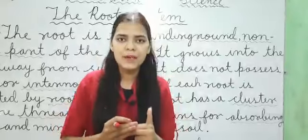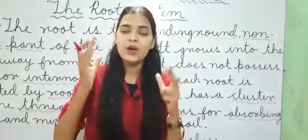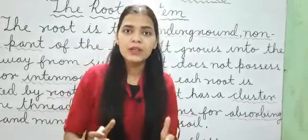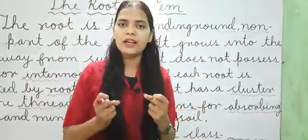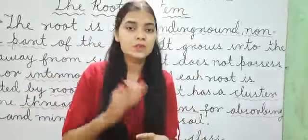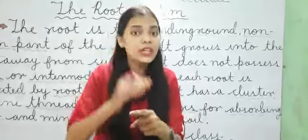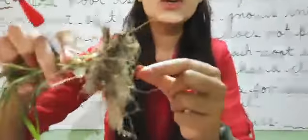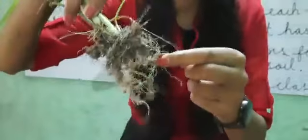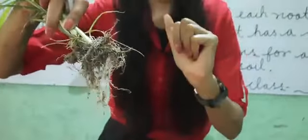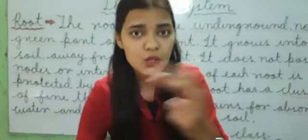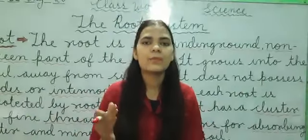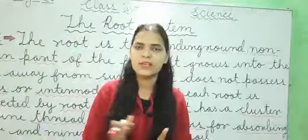Usi tareeqe se, plants mein jo essential nutrients hote hain — jaise water, sunlight, manure, aur soil mein jo minerals hote hain — unko bhi absorb karne ka kaam yahan roots karte hain, yeh root hairs karte hain. Root hairs soil se absorb karte hain — sowsit karte hain — water aur minerals ko. Phir yahan se poori body mein transfer karte hain, upar le jaate hain towards the shoot system. Is tareeqe se har ek part ko minerals, water — you can say nutrients — milte hain.